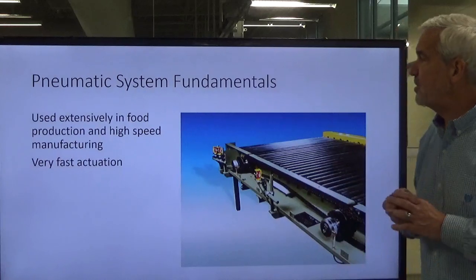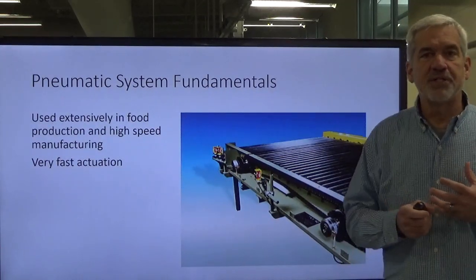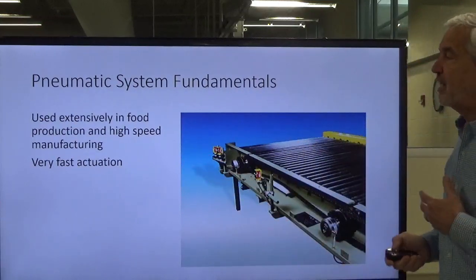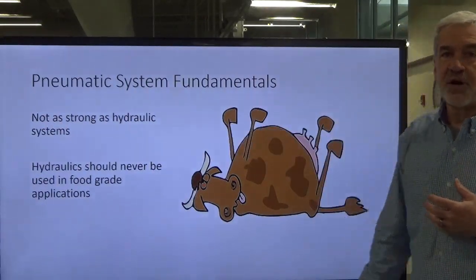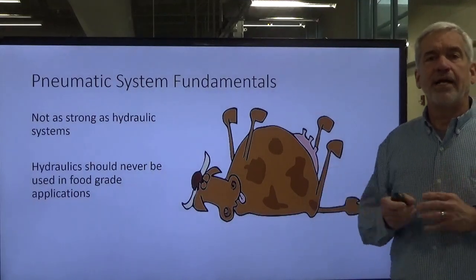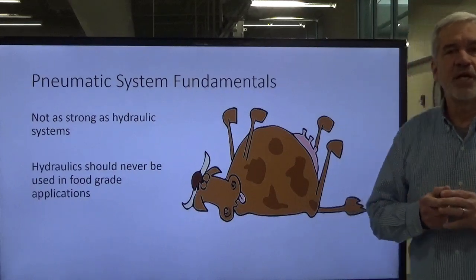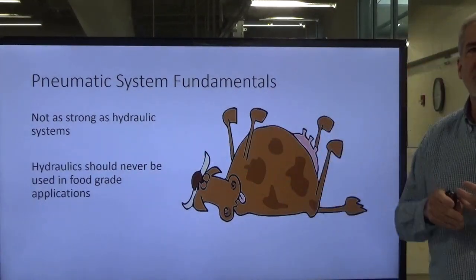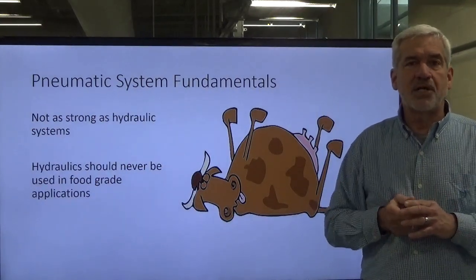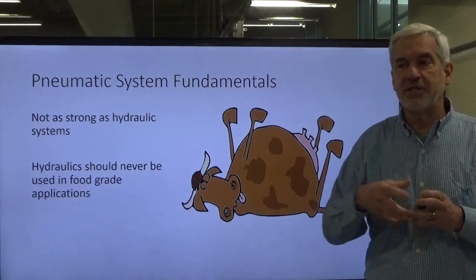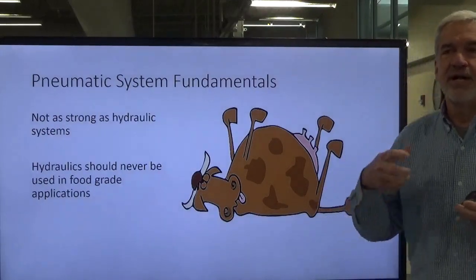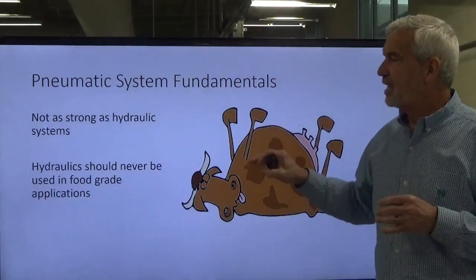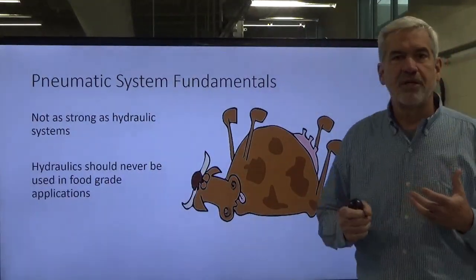Pneumatics are used extensively in the food processing industry. They have very fast actuation — cylinders move much quicker than with hydraulics. One drawback is they're not as strong as hydraulics. Hydraulics should never be used anywhere food is involved; a hydraulic leak into feed or beer could contaminate it, harm animals or people, and create serious liability. I used to work in a feed mill as a maintenance supervisor, and we used pneumatics exclusively for that reason. You certainly don't want hydraulic fluid in your beer.